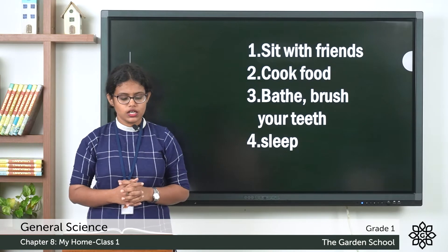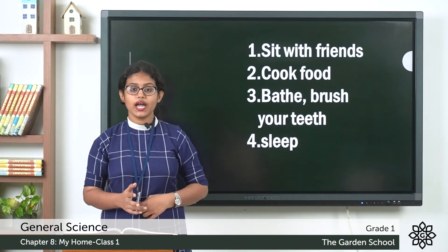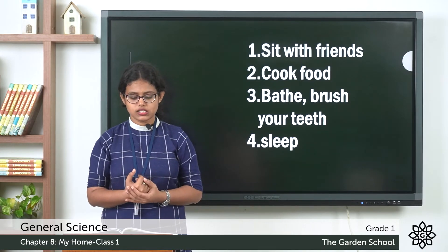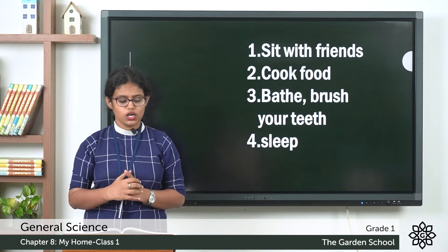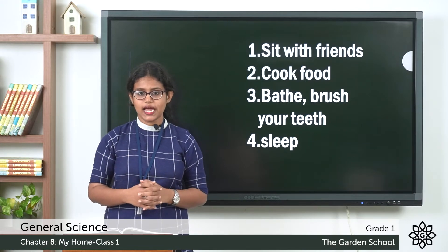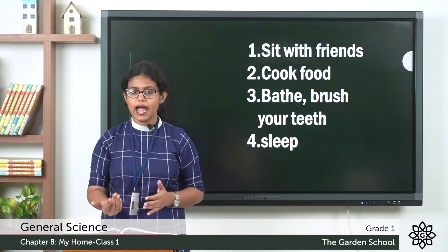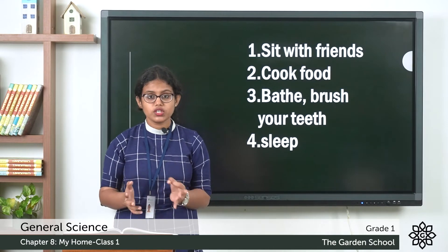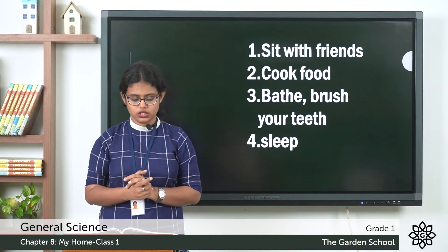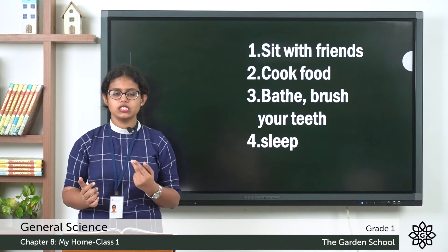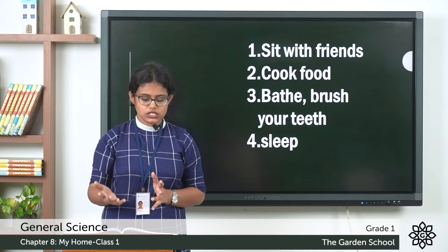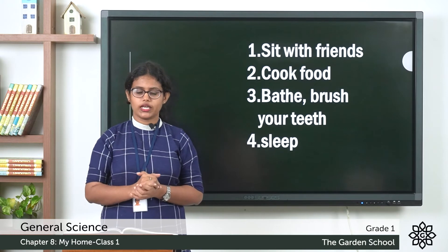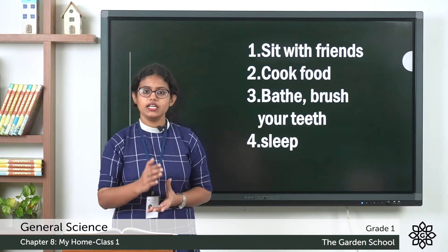Coming to the next activity — you can see different pictures and you have to name the rooms, then check the activities you do in those rooms. The first room shows a sofa, a table, and a lamp — it is the living room. Activities: sit with friends and watch TV. So in the box write 'living room' and tick those activities.